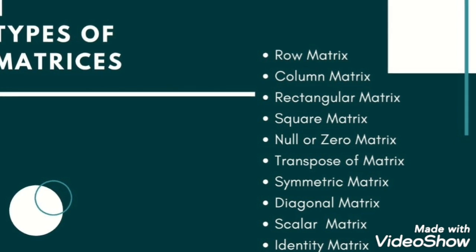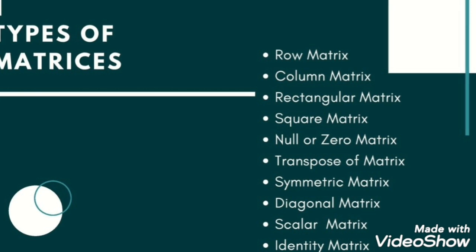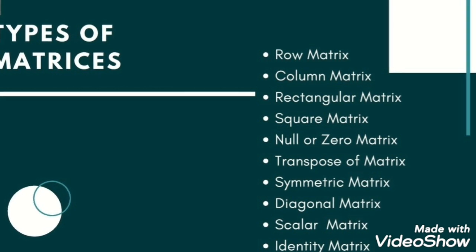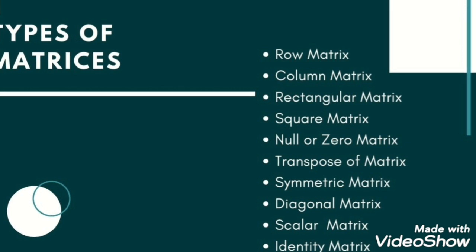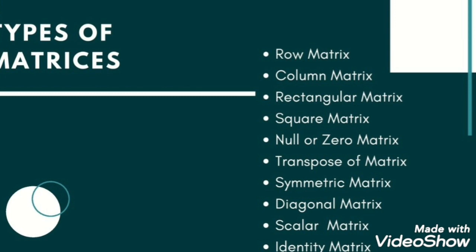Symmetric matrix, diagonal matrix, scalar matrix, identity matrix. Identity matrix is also called a unit matrix because all the diagonal entries are one, that's why it's called a unit matrix.